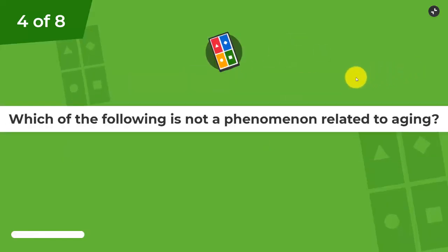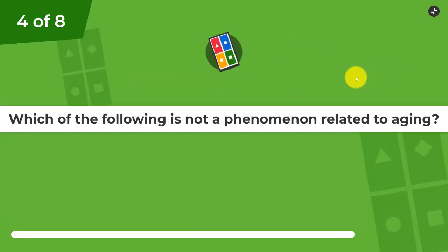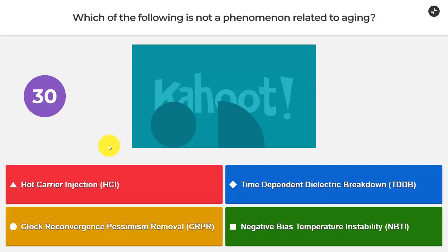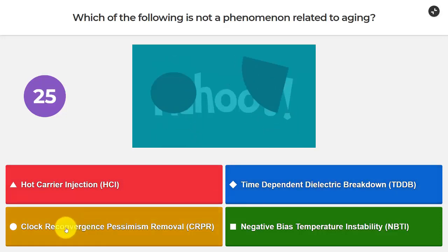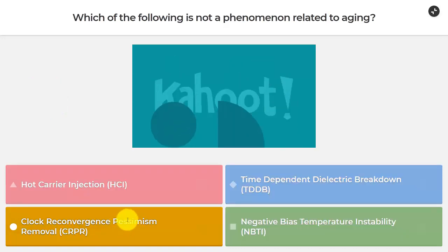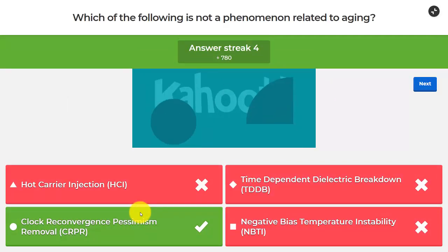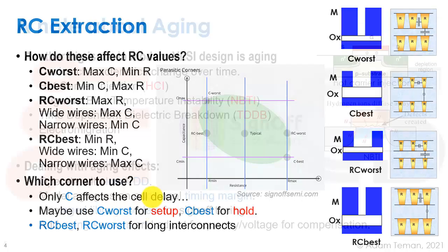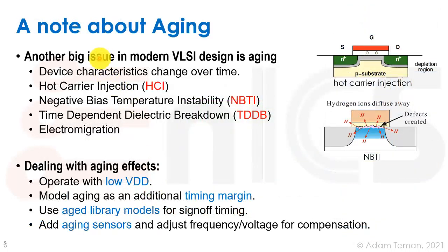Question number four: which of the following is NOT a phenomenon related to aging? Hot carrier injection, time-dependent dielectric breakdown, clock reconvergence pessimism, or negative bias temperature instability? The answer is clock reconvergence pessimism — it has nothing to do with aging.